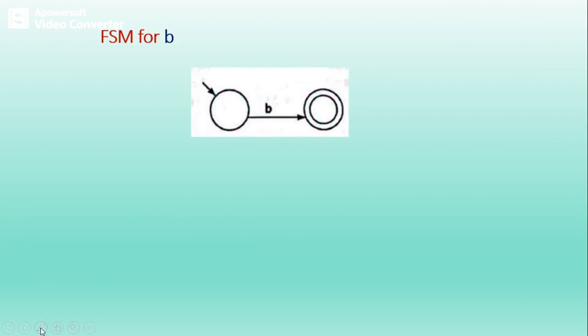First, I will construct FSM for B, since the problem involves B union AB. To construct FSM for B, just take a start state, have a transition for character B, and reach an accepting state. This is a simple FSM for B.